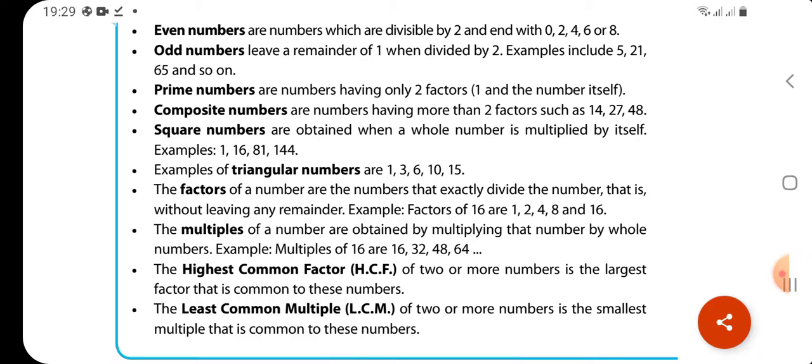Odd numbers leave a remainder 1 when divided by 2. Prime numbers are numbers having only 2 factors, 1 and the number itself.